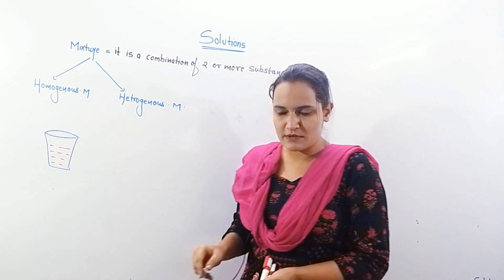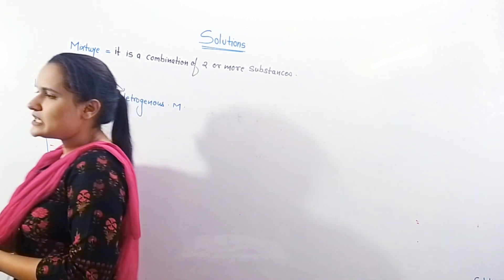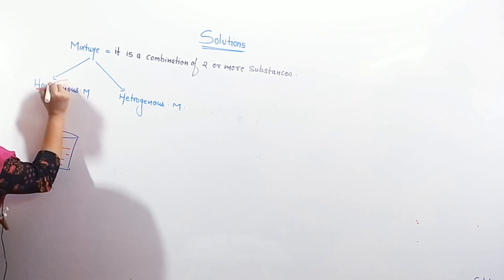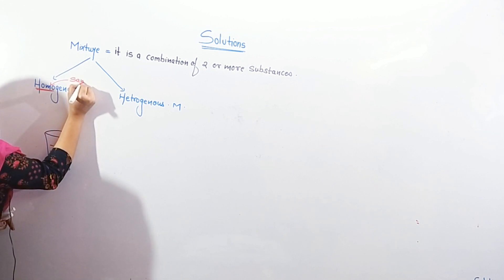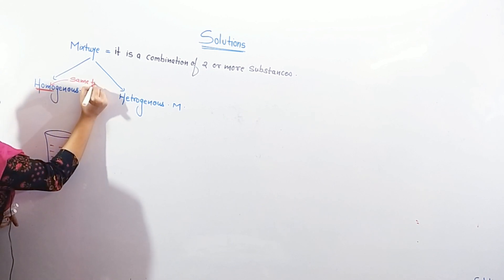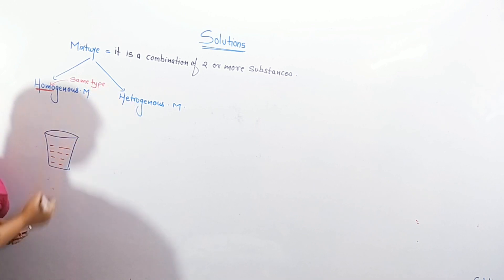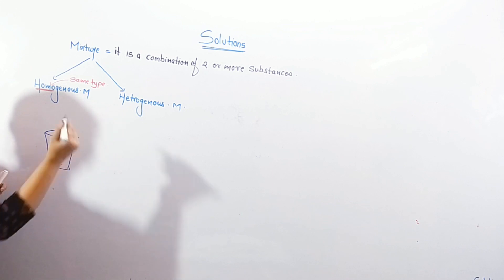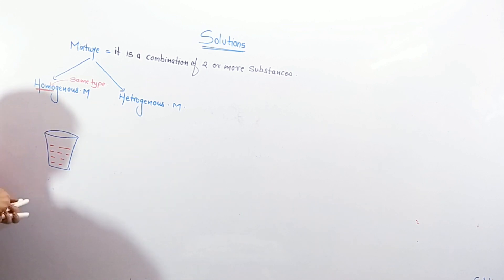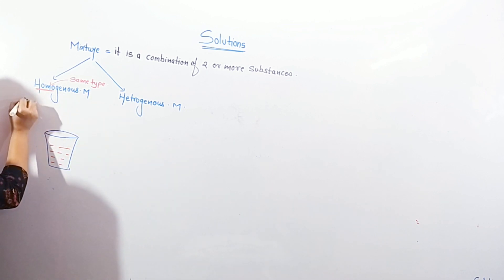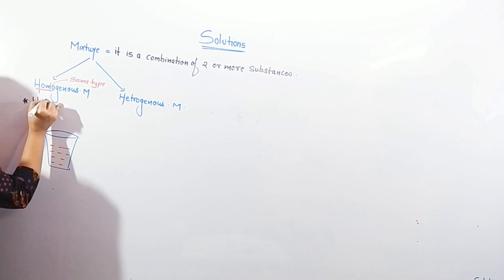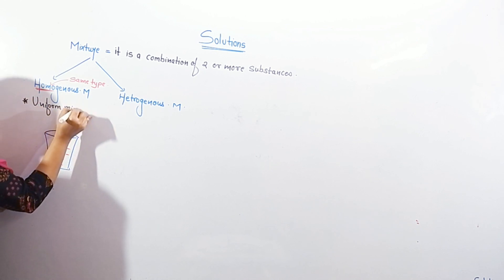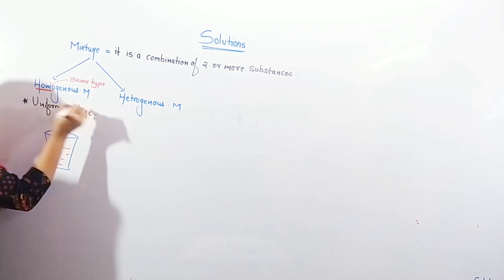In a homogeneous mixture, the word 'homo' stands for same, and 'geneous' stands for type — so same type. A homogeneous mixture can also be known as a uniform mixture, because it has the same composition throughout.